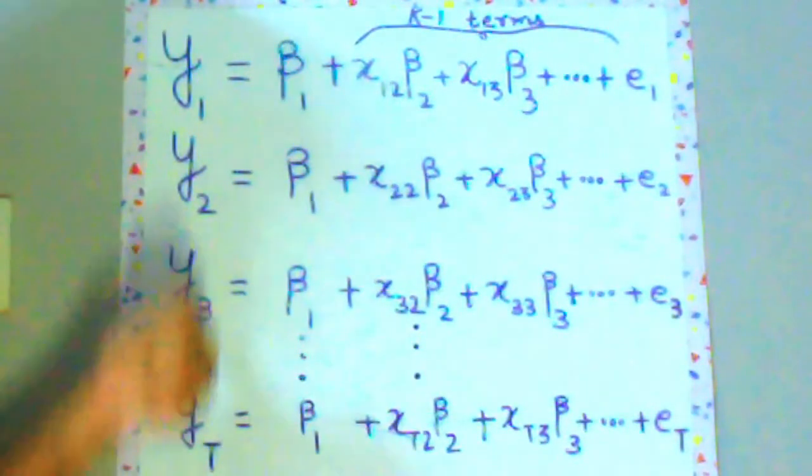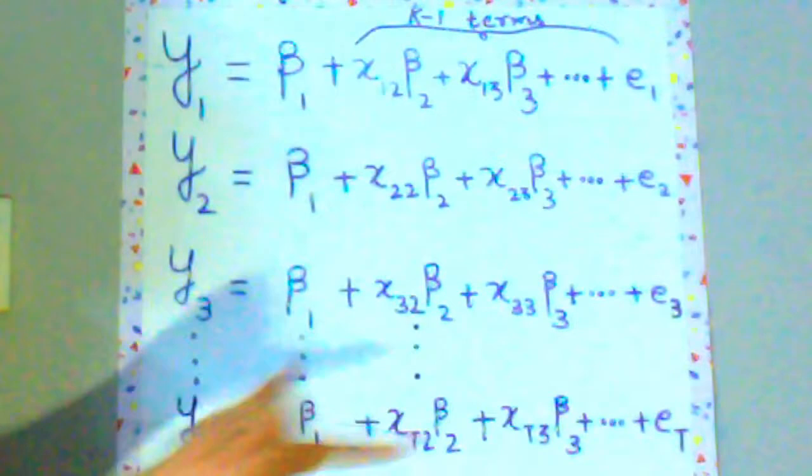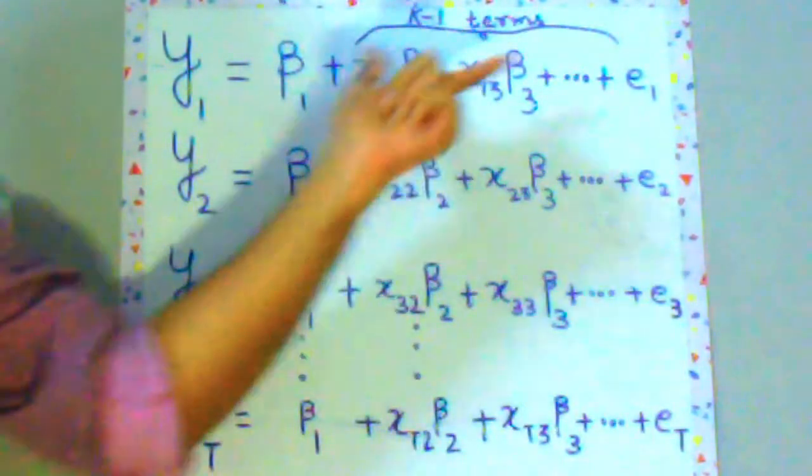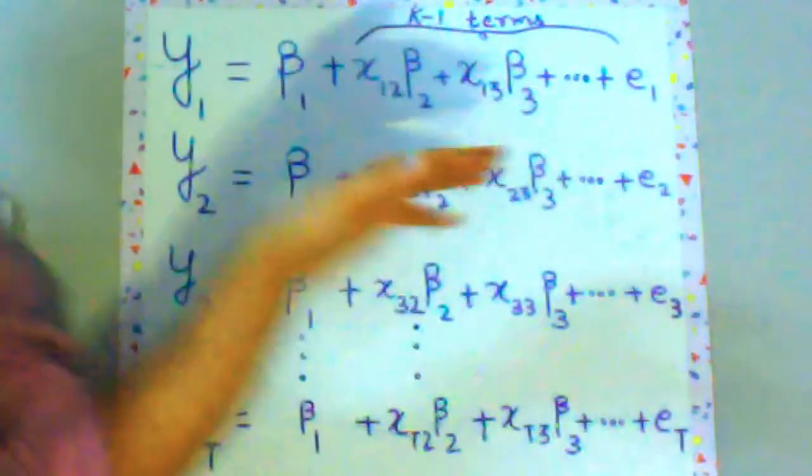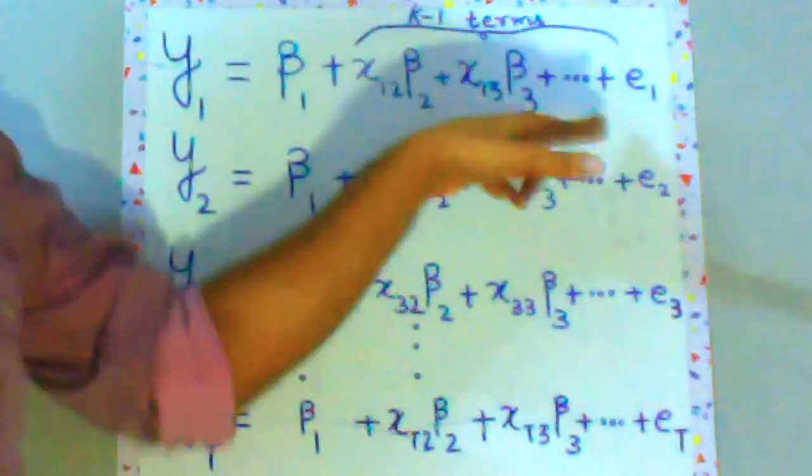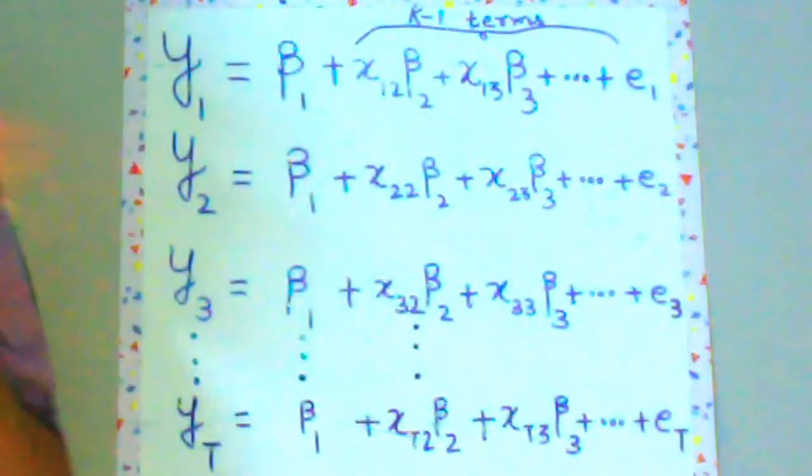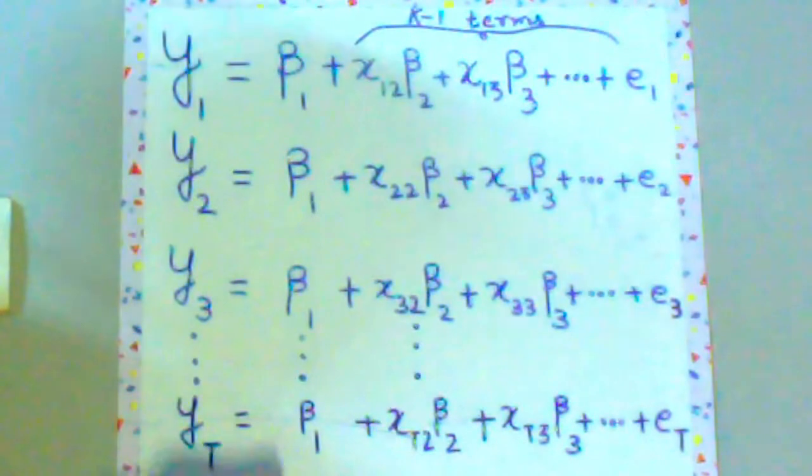You have t observations and k-1 predictors. That is why I have written k-1 terms. So it goes from beta 2 to beta k. That is why from 2 to k so k-1 predictors. If you recall y is equal to a plus bx, a had no predictors. Similarly beta 1 has no predictors.